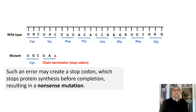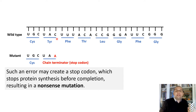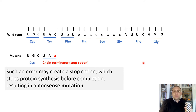If the substitution happens early in the sequence and the codon is changed to translate into a stop signal, then the protein will not be made, which could cause serious consequences. Here the wild type codon is UAC, but a substitution occurs and we end up with UAA. UAA is a chain terminator — in other words, a stop codon. The protein is not produced at all, and this is what we call a nonsense mutation.